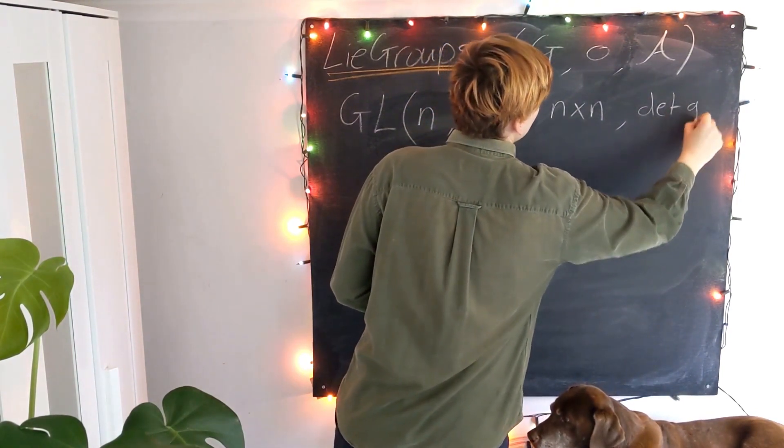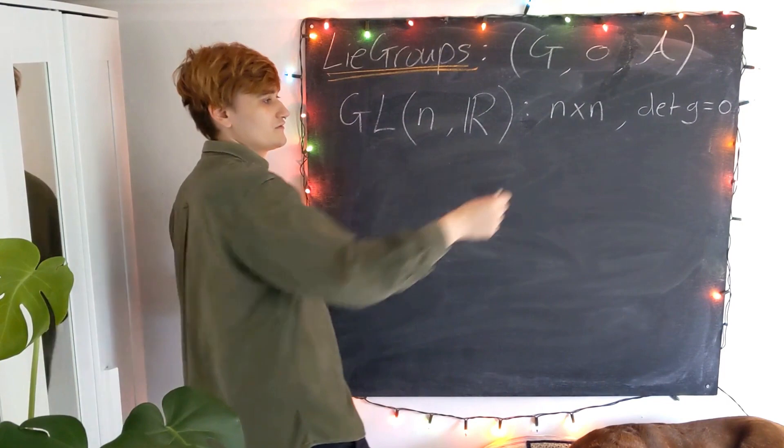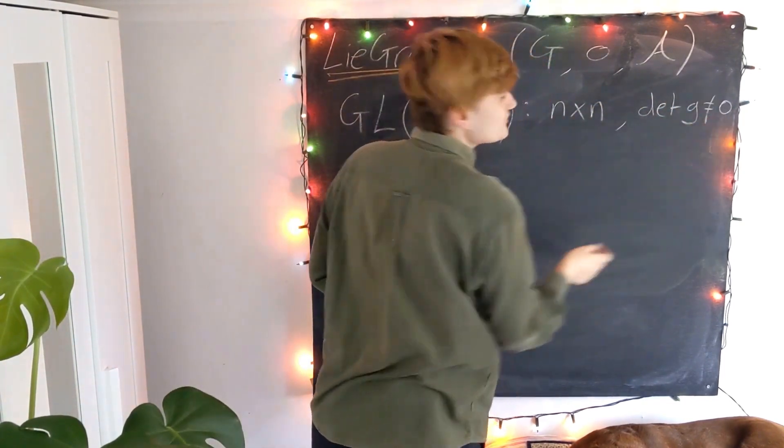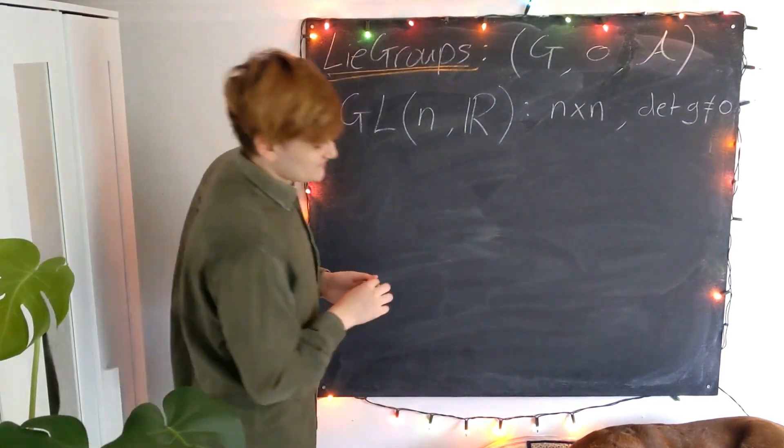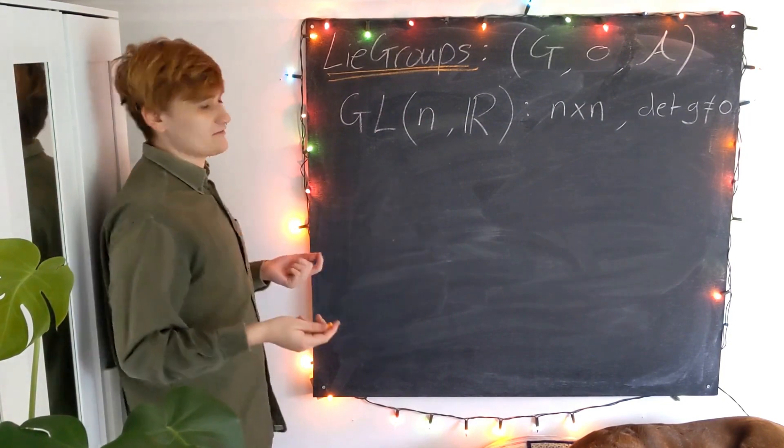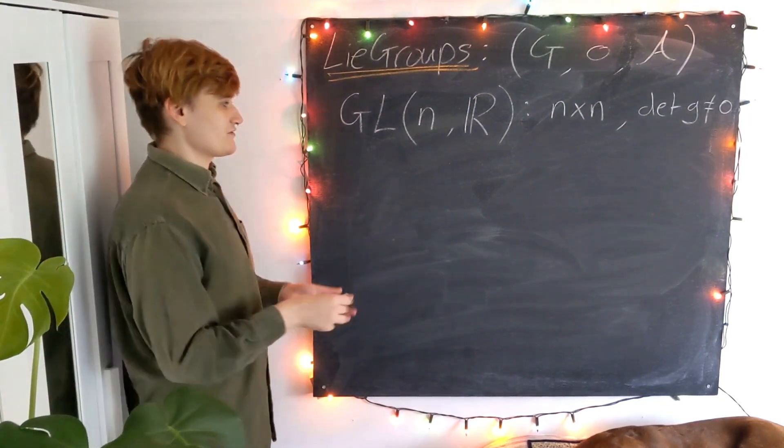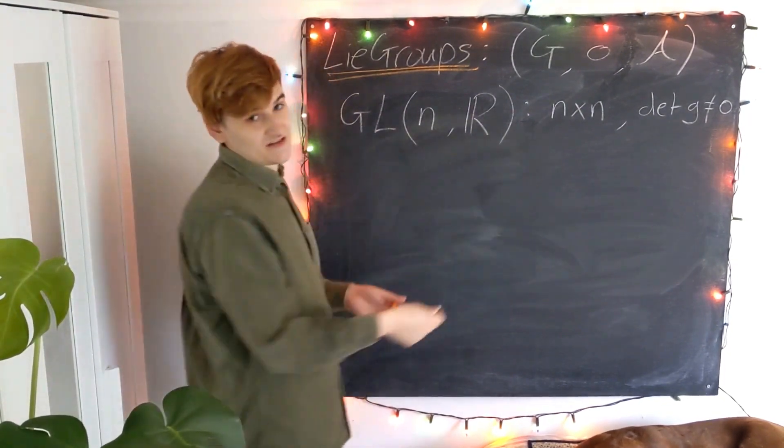So essentially that just means that they have zero determinant. And now I'll call the group element G, and to be invertible, sorry, it has to have non-zero determinant. This is kind of a vague statement about the general linear group, it's essentially the group of all n by n matrices.